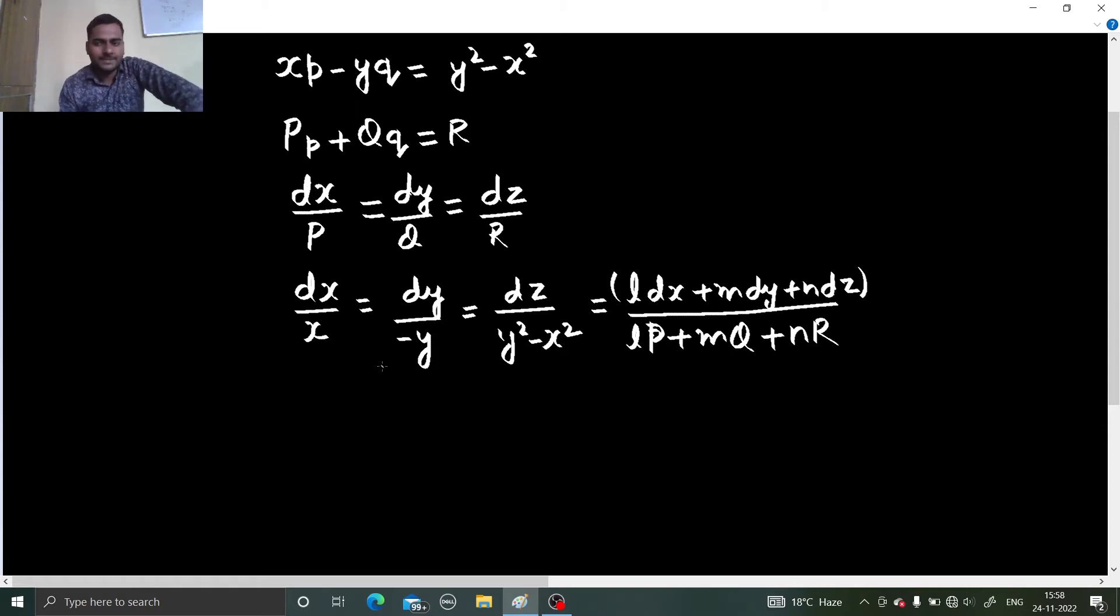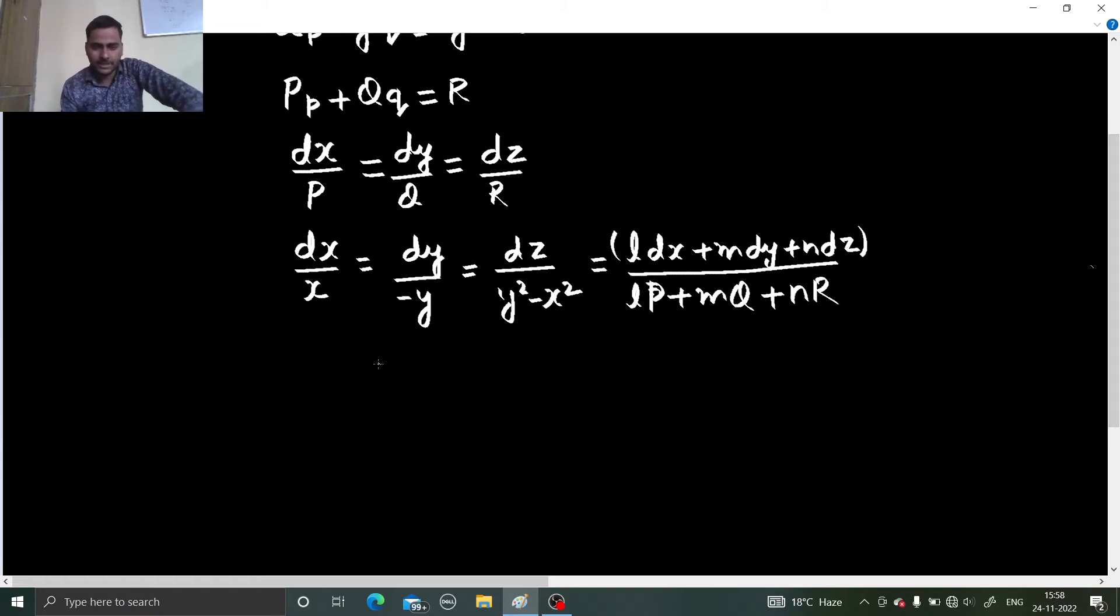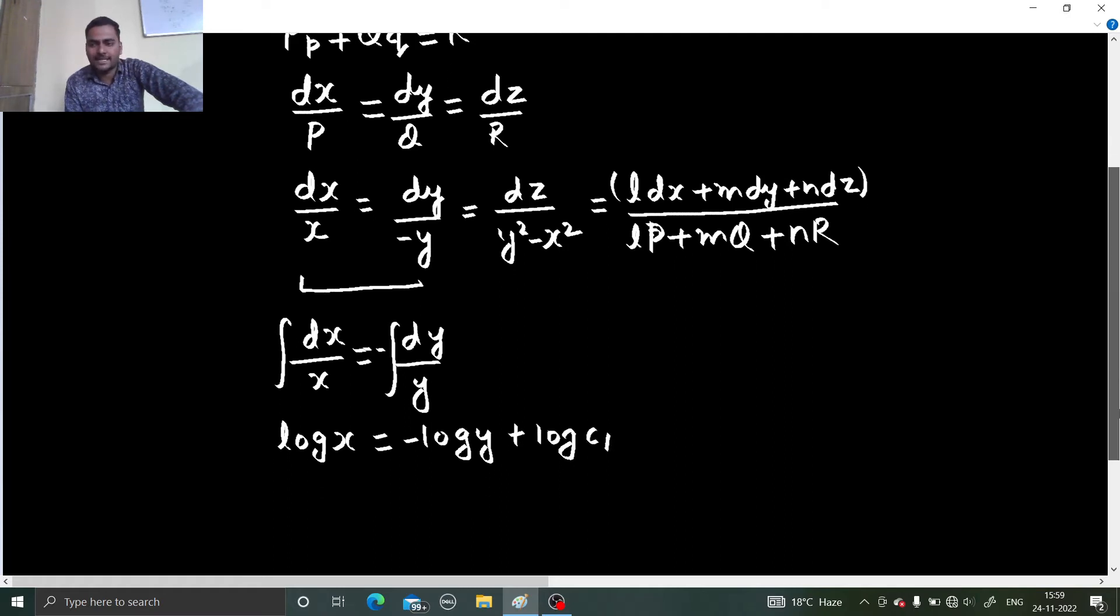So these are the options. Let's see. First thing, go simple. Method of grouping is working here with these two. So if I take these two, so dx by x equals to dy by minus y. Just integrate them.